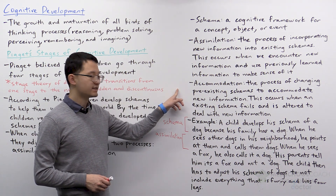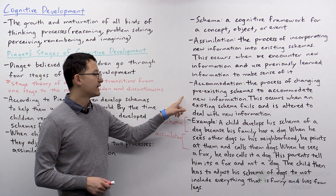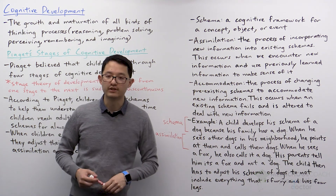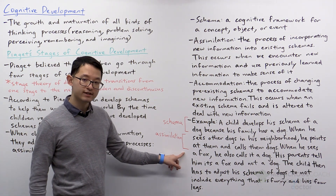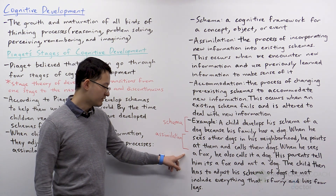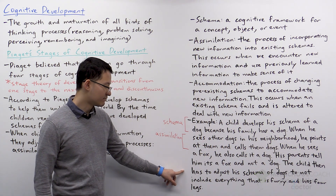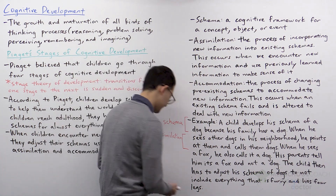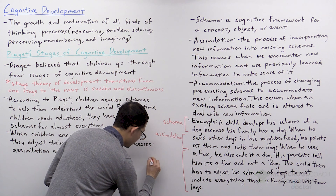Accommodation is the process of changing pre-existing schemas to accommodate new information. This occurs when an existing schema fails and is altered to deal with new information. To continue the example, the child then sees a fox and calls it a dog. His parents tell him it's a fox and not a dog. The child then has to adjust his schema of dogs to not include everything that is furry and has four legs. This is an example of accommodation.